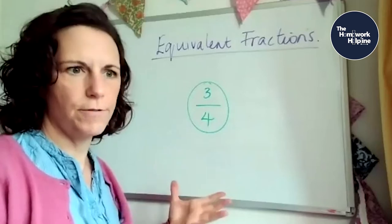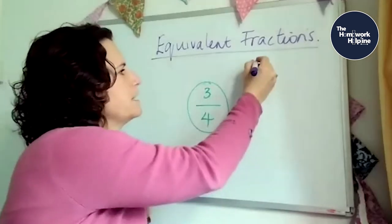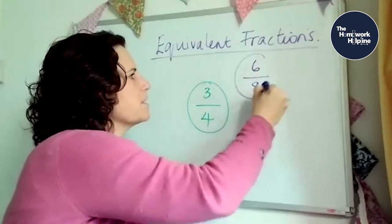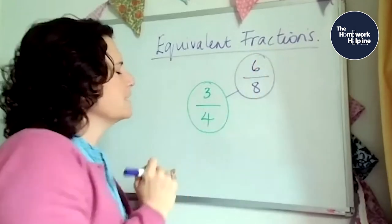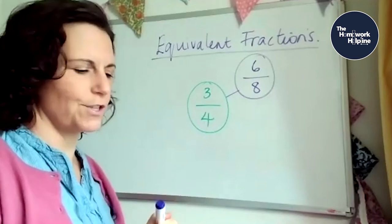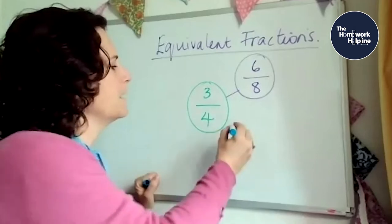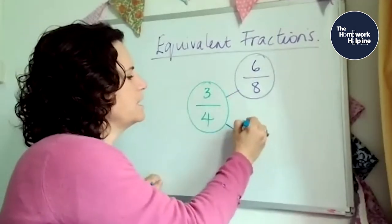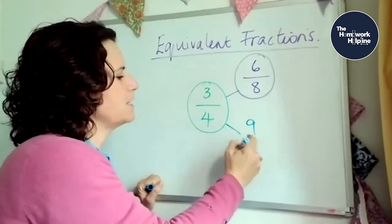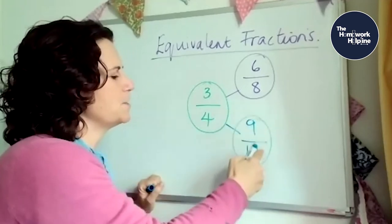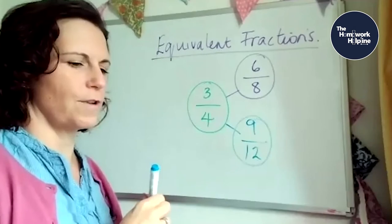So you can choose any number you want, but we're going to multiply the top and the bottom number by the same number. So for example, let's start with two. So two times three is six, and two times four is eight. So six eighths is equivalent to three quarters. We can then do times it by three. So three times three is nine, and three times four is 12. So nine twelfths is the same as three quarters.